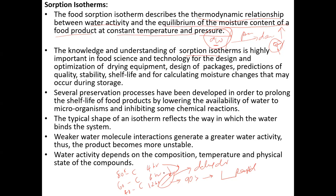Equilibrium means beyond that point, moisture will not be removed further. The knowledge and understanding of sorption isotherms is very important in food science and technology for design and optimization of drying. It helps determine at what temperature to dry a vegetable, what packaging to use, and what quality will be achieved.